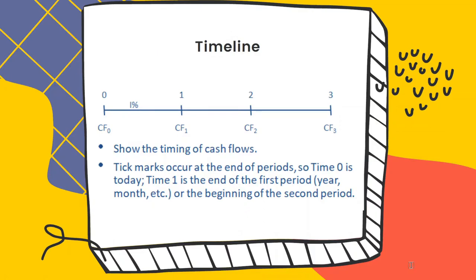Before we begin, it is practical and very useful to understand the concept of a timeline. When we deal with cash flow occurring at different times, it is very helpful to use a timeline. For example, at present time or time zero which is today, one could be one year from now, two could be two years from now or at the end of year two. We can then associate cash flow with the time period — cash flow at the end of year one or two years from now.